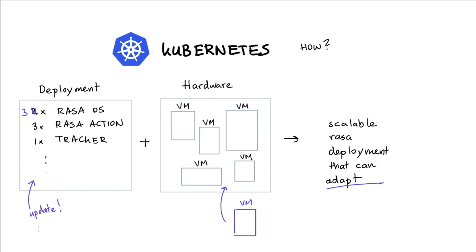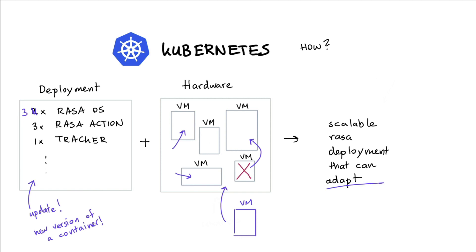Another update might involve a new version of a container, meaning the software currently running inside our VMs needs to update — but we want this to happen without the service going down. Another scenario is that one of our resources actually goes down, such as a network error or a broken VM. In that case, we want Kubernetes to adapt and redeploy our services to other VMs.